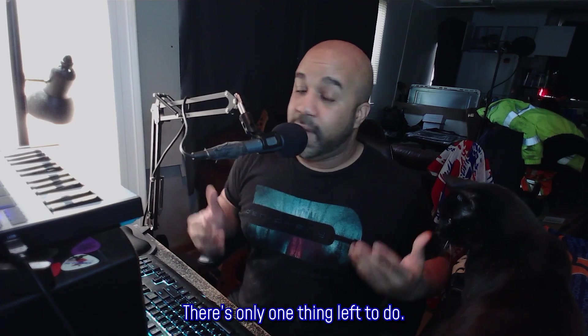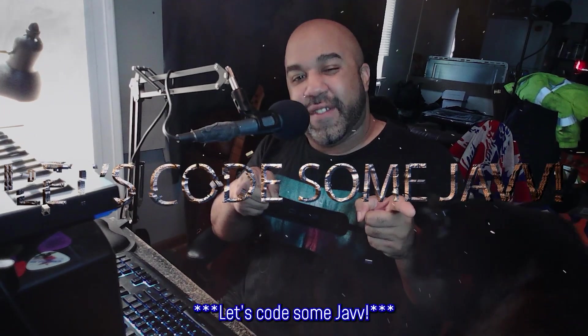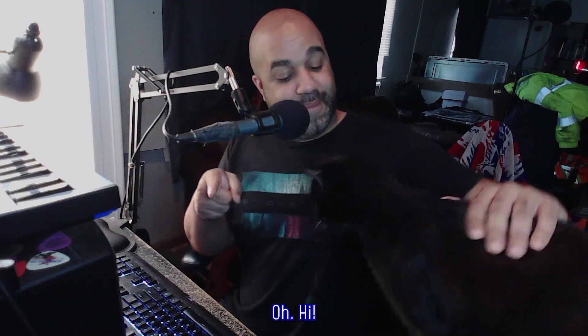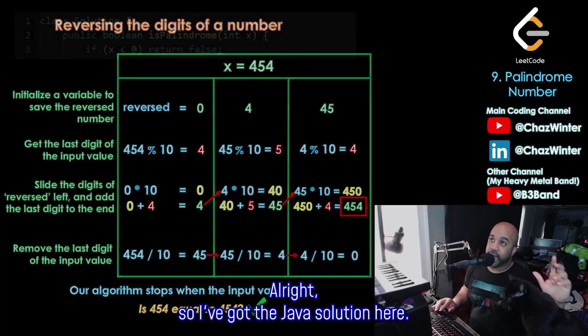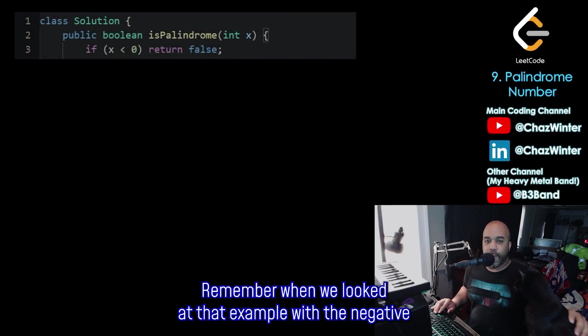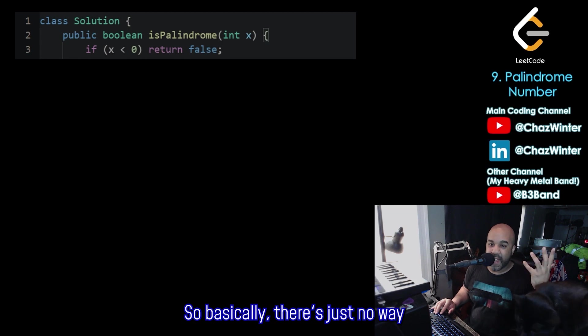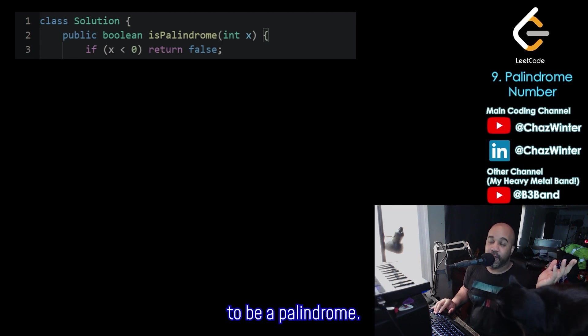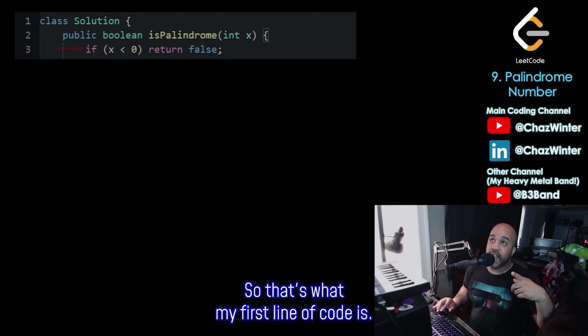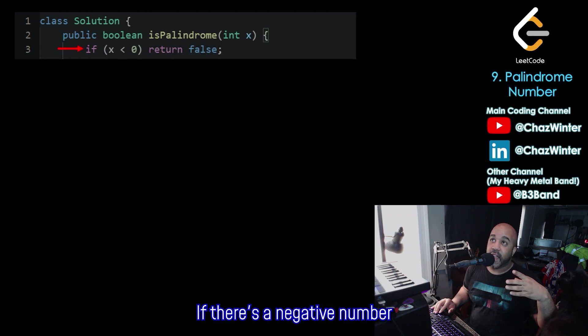Alright, so we've seen our algorithm. There's only one thing left to do. Let's code some Java. Whoa. Hi. Alright, so I've got the Java solution here. Remember when we looked at that example with the negative value and the negative sign went to the end of the number? So basically, there's just no way for a negative number to be a palindrome. So that's what my first line of code is. If there's a negative number, if x is less than zero, just return false.